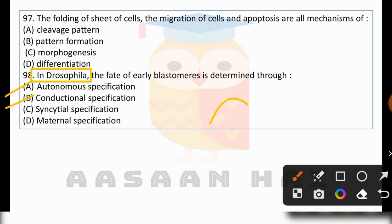In syncytial specification, the nucleus divides but the cell membrane does not divide initially. The nuclei divide and migrate to specific sites, and then each nucleus becomes covered by cell membrane. Only then are the cells separated.